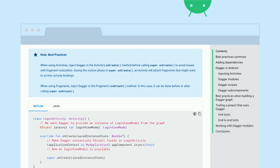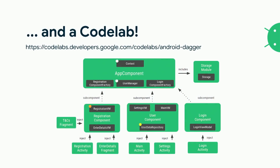But that's not it — we also released a new codelab. We believe that the best way to learn a topic is with hands-on code. So we released this codelab called 'Using Dagger in your Android application,' where by the end of the codelab you will build an application graph. It starts like any other application with an initial manual dependency injection implementation that you will refactor to build something like this.